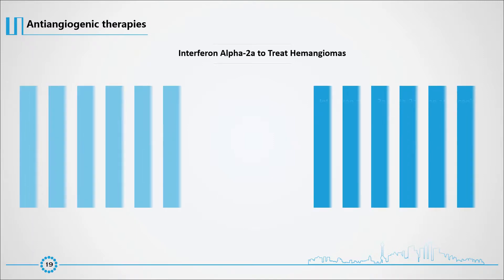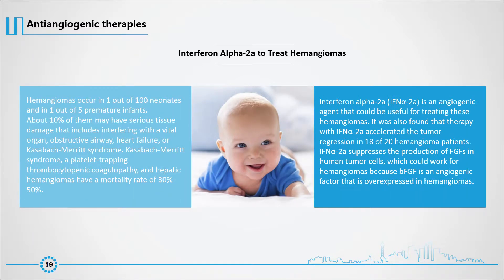Hemangiomas occur in 1 out of 100 neonates and in 1 out of 5 premature infants. About 10% of them may have serious tissue damage, including interference with a vital organ, obstructive airway, heart failure, or Kasabach-Merritt syndrome. Interferon-alpha-2a (IFN-alpha-2a) is an antiangiogenic agent useful for treating these hemangiomas. Therapy with IFN-alpha-2a accelerated tumor regression in 18 of 20 hemangioma patients. IFN-alpha-2a suppresses the production of FGFs in human tumor cells, which could work for hemangiomas because bFGF is an angiogenic factor overexpressed in hemangiomas.